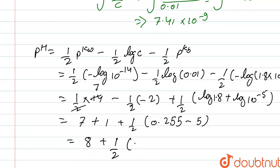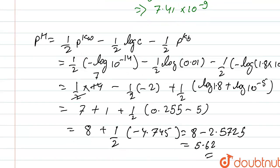Which is 8 minus 2.5725, that gives us 5.62. This is the value of pH.